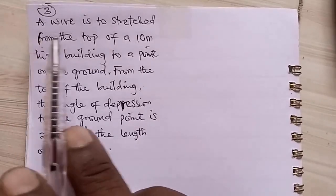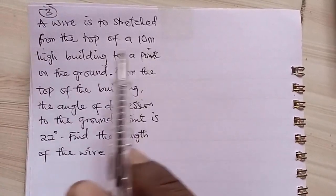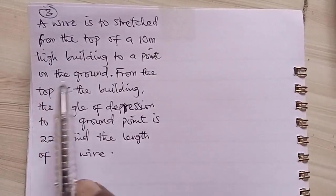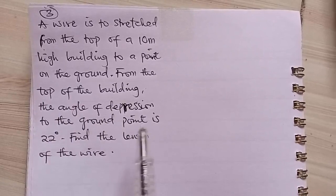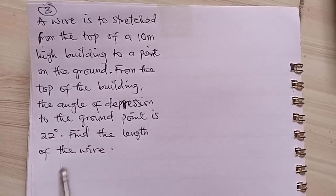The next question says, a wire is to be stretched from the top of a 10 meter high building to a point on the ground. From the top of the building, the angle of depression to the ground point is 22 degrees. Find the length of the wire.